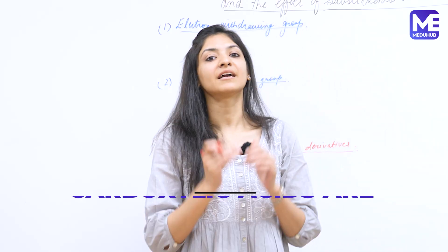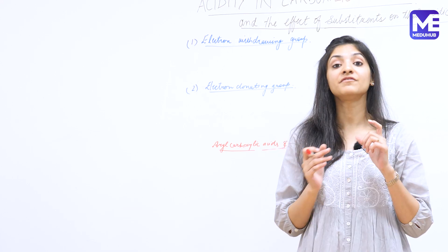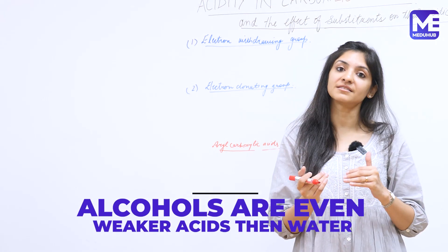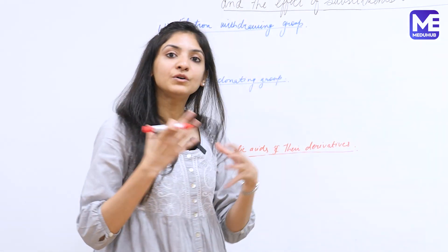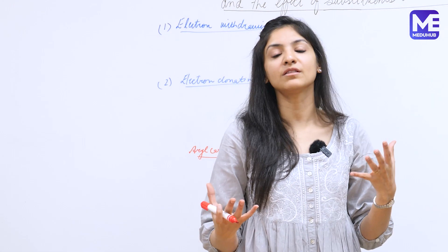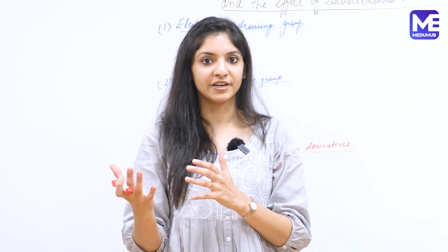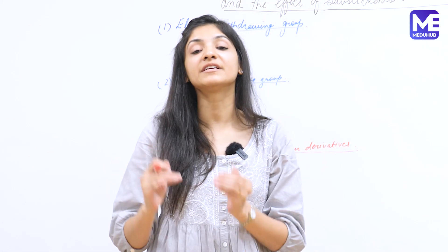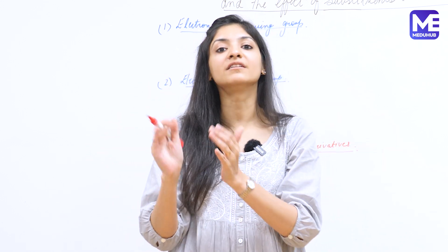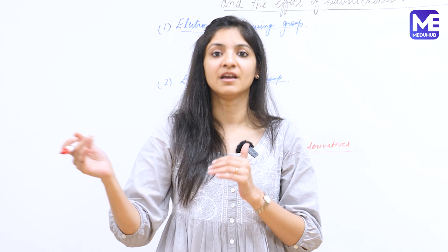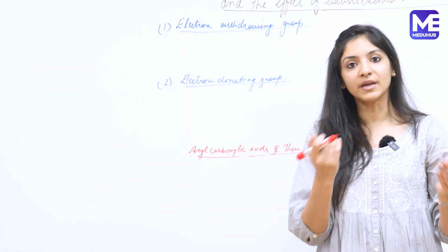In fact, alcohols are even weaker acids than water. To judge the acidic strength of an acid, we look at the conjugate base and assess its stability. If it is highly stable, the reaction will be favored in the forward direction and the release of a proton will be facilitated. If it is not stabilized, then it will be a weaker acid.